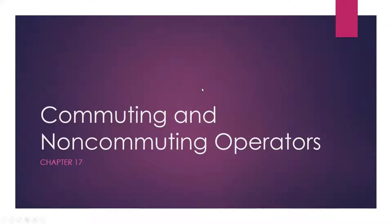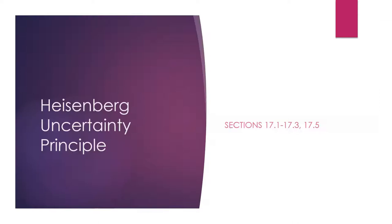Welcome back, students. In this chapter, we are going to explore how different quantum mechanical operators interact with each other. At this point, you are all somewhat familiar with Heisenberg's uncertainty principle — that we cannot know both a particle's position and its momentum at the same time. In this chapter, we're going to look at what the origin behind this principle is and what consequences it has on quantum mechanics.